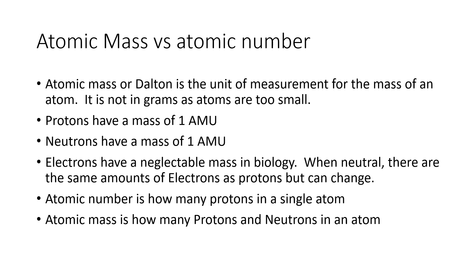I want to talk about atomic mass versus atomic number. Atomic mass is how much something weighs in atomic mass units, or Daltons — units too small to measure in grams. A proton has a mass of one atomic mass unit, a neutron also has one atomic mass unit, and electrons are negligible in biology.